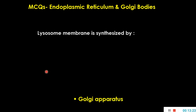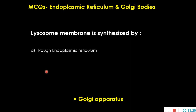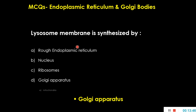The next MCQ: the lysosome membrane is synthesized by — rough endoplasmic reticulum, nucleus, ribosomes, Golgi apparatus, or mitochondria? If you know from where lysosomes originate, you can answer this. The right answer is the Golgi apparatus.